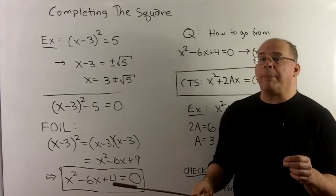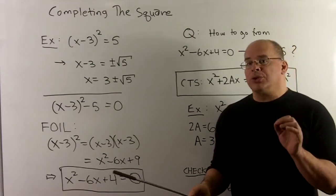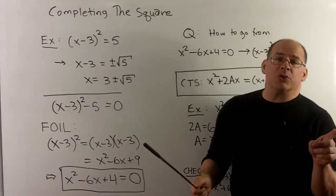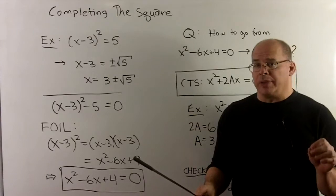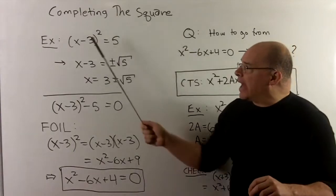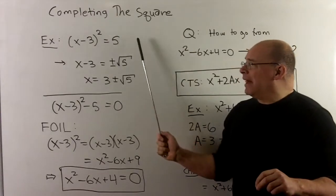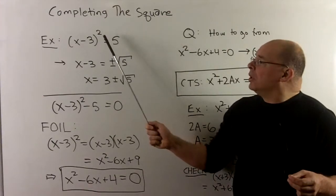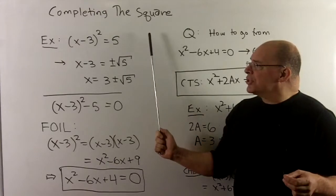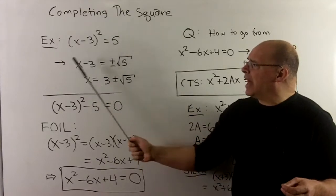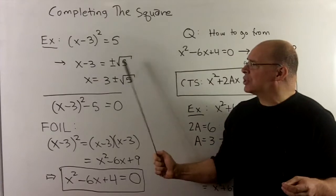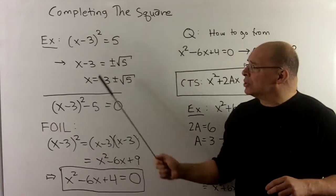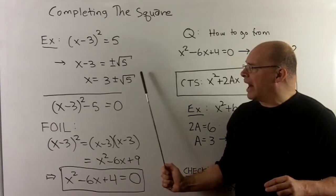To make the most of the square root property, we need one powerful trick: completing the square. Let's first review how the square root property works with an example. Take x minus 3 squared equal to 5. To apply the square root property and get rid of the square, we plus-or-minus the square root of the other side, giving x minus 3 equal to plus-or-minus square root of 5. The 3 moves over, and we get x equal to 3 plus-or-minus square root of 5.